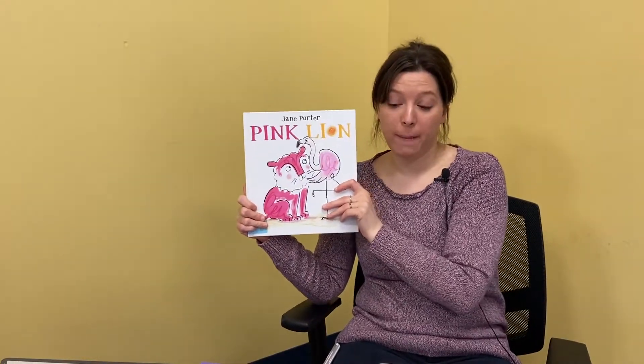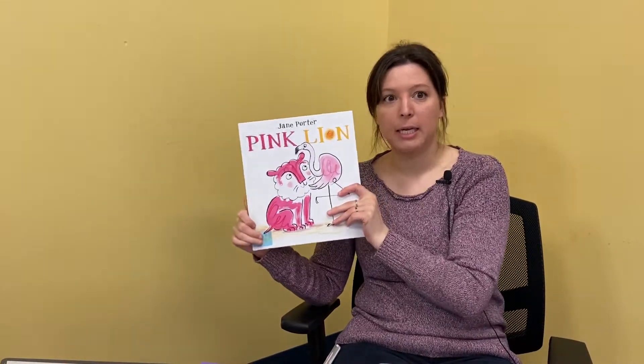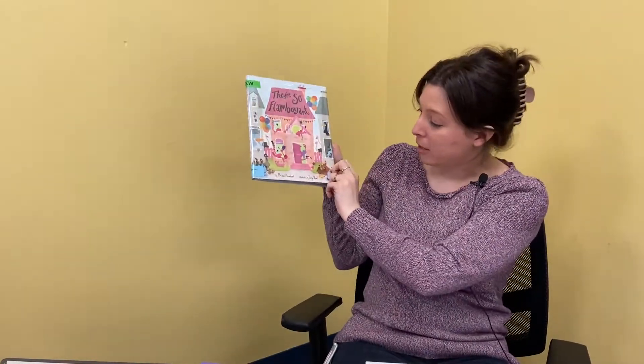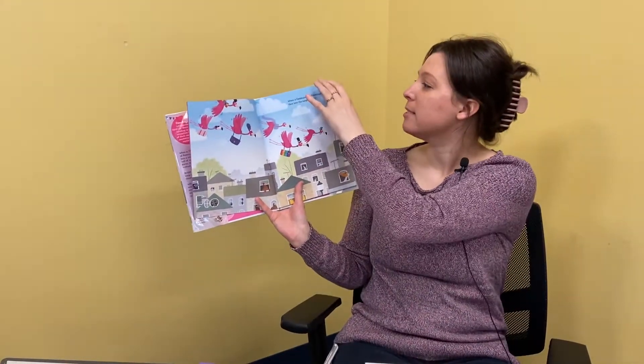Now, I know this was about a pink lion who's adopted by some flamingos. Now we're going to read about a different flamingo family. This is a brand new book. This is called They're So Flamboyant. And it is by Michael Genhart and illustrated by Tony Neal. And what you need to know before we start this book is that a group of flamingos is called a flamboyance. So you'll get it as soon as we start. So let's begin.